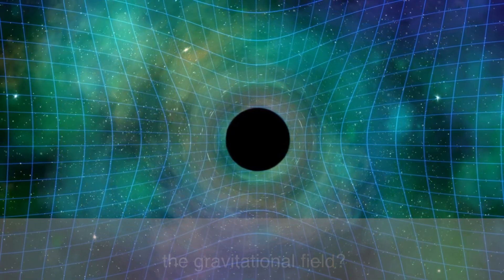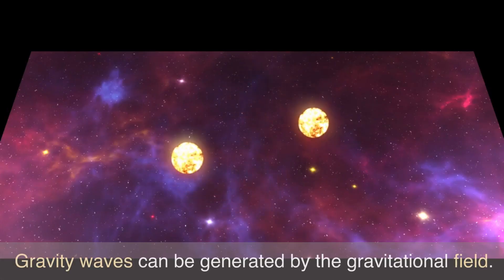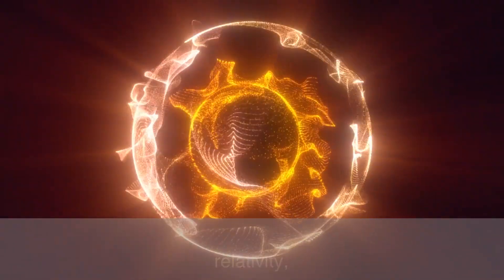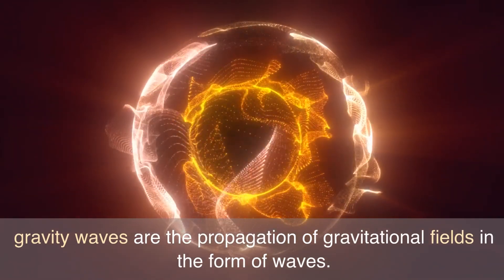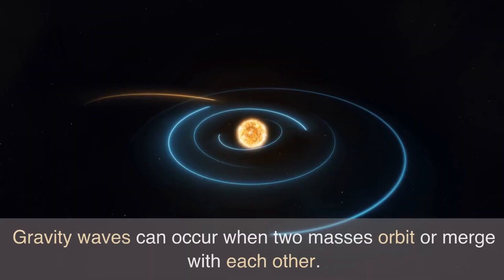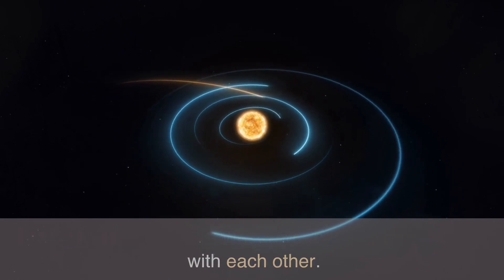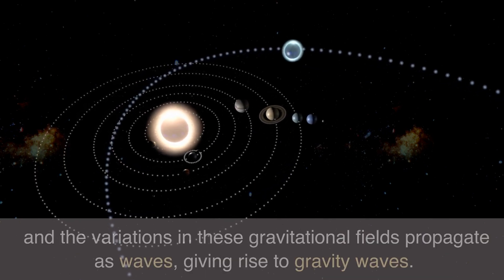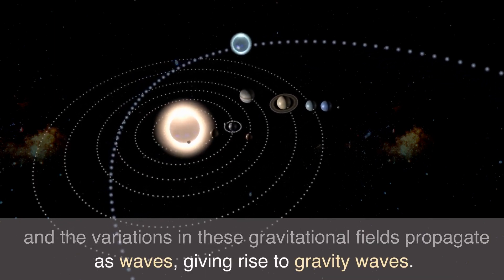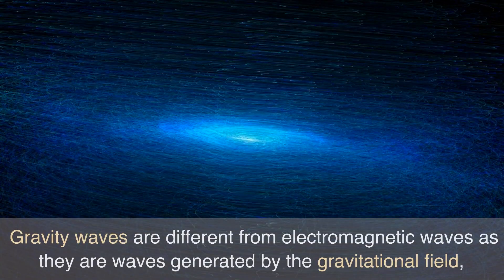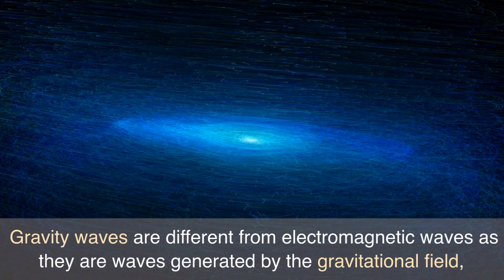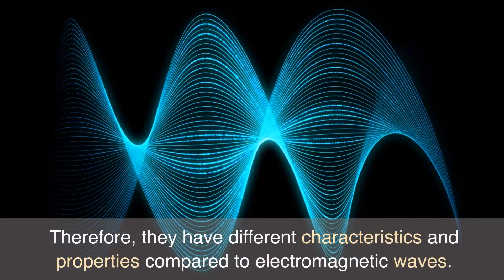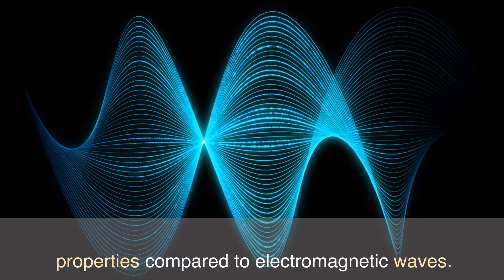Are gravitational waves generated by the gravitational field? Yes, that's correct. Theoretically predicted by Einstein's general theory of relativity, gravity waves are the propagation of gravitational fields in the form of waves. They can occur when two masses orbit or merge with each other. As these masses move, gravitational fields are generated in their surroundings, and the variations in these fields propagate as waves. Gravity waves differ from electromagnetic waves, as they are generated by the gravitational field — not the electromagnetic field — and therefore have different characteristics and properties.